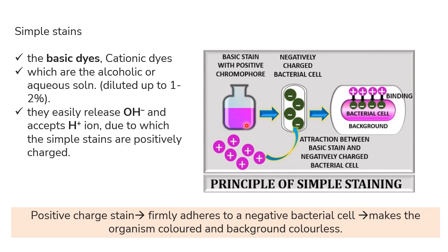For example, safranin is a basic stain with a positive chromophore group, so it carries a positive charge and will stain the bacterial cell. The bacterial cell wall has a negative charge, so the chromophore group binds to it and stains the cell. This is the principle of simple staining or monochrome staining — the positively charged stain firmly adheres to the negatively charged bacterial cell wall, making the organism colored and the background colorless.